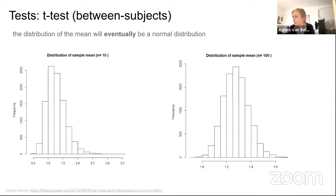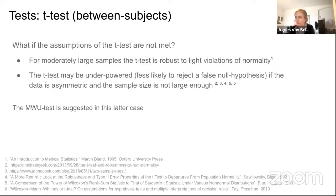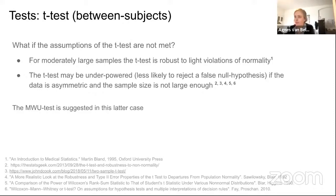There is a lot of literature suggesting that for moderately large samples the t-test is fairly robust to light violations of normality. However, the t-test may be underpowered — less likely to reject a false null hypothesis — if the data is asymmetric (skewed) and the sample size is not large enough. In that case, the Mann-Whitney U test is often suggested as an alternative.